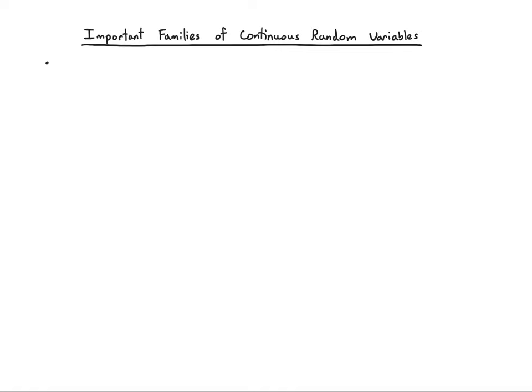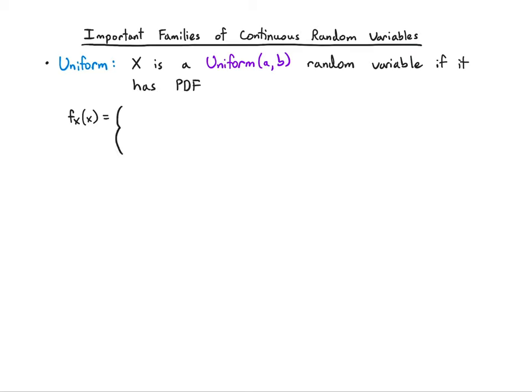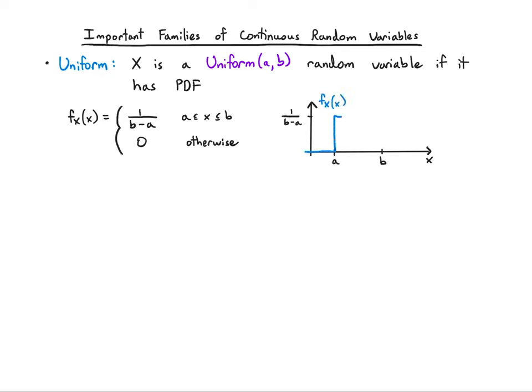We'll start with the easiest one: the uniform random variable. X is a uniform(a, b) random variable if it has the following PDF. It starts at a and goes to b, with height one over b minus a — so it's just a box of height one over b minus a from a to b. This is the analog of a discrete uniform random variable, except now it takes values on the interval of the real line between a and b.